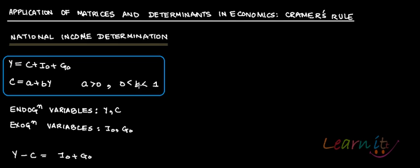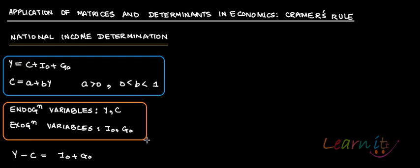The two endogenous variables in this system of equations are Y and C — they are determined within the system, as they appear in both equations. I₀ and G₀ are not determined within the system, so the exogenous variables are I₀ and G₀, the endogenous variables are Y and C, and the constants are a and b.